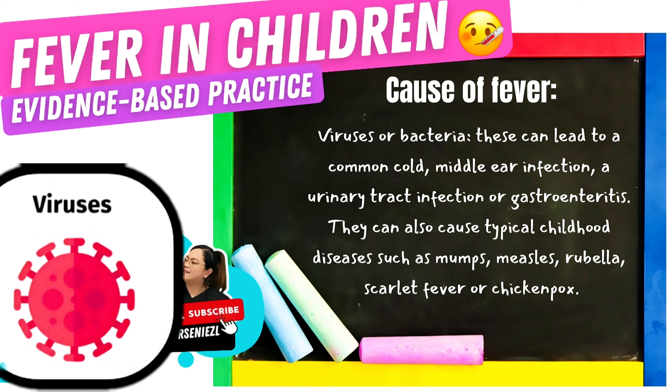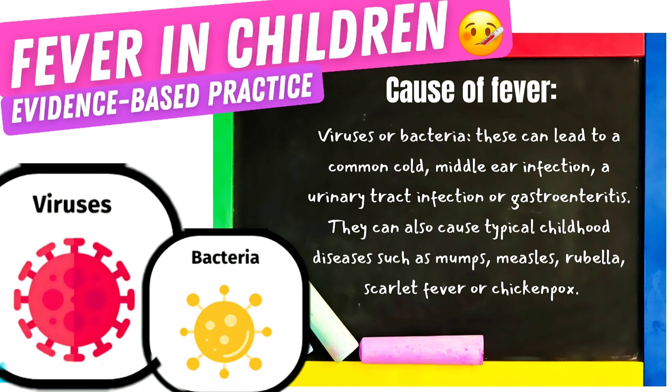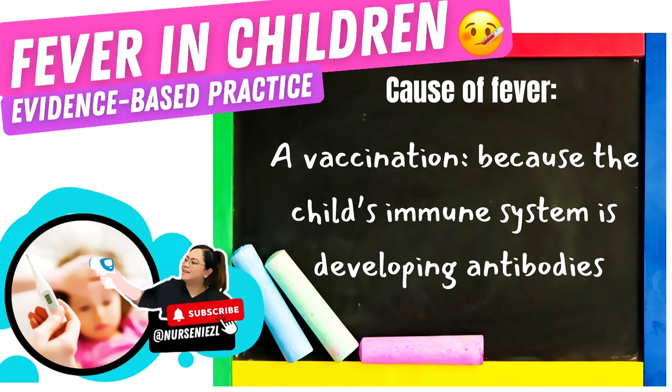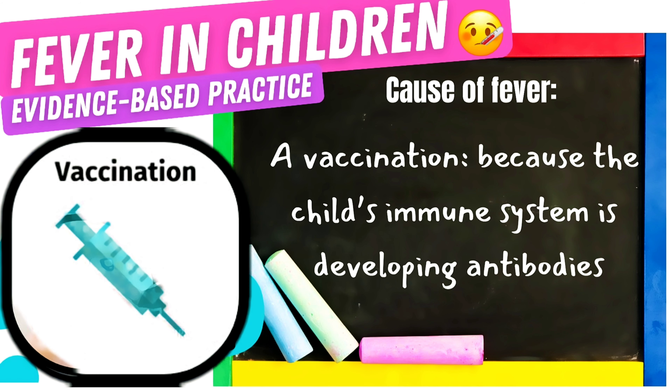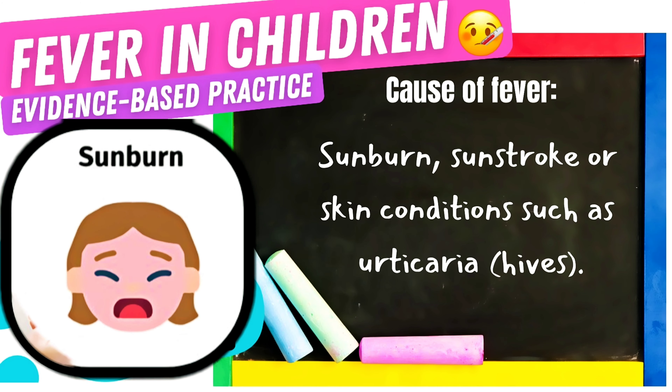Viruses or bacteria can lead to common cold, middle ear infection, urinary tract infection, or gastroenteritis. They can also cause typical childhood diseases such as mumps, measles, rubella, scarlet fever, or chickenpox. Vaccination can cause fever because the child's immune system is developing antibodies. Sunburn, sunstroke, or skin conditions such as urticaria or hives can also be causes.